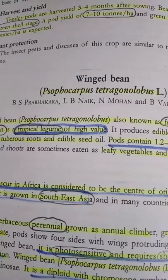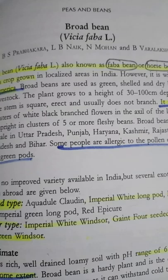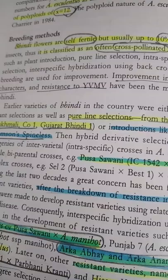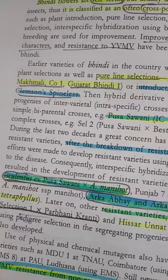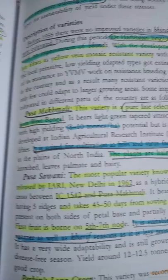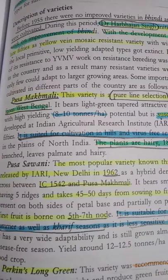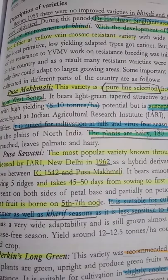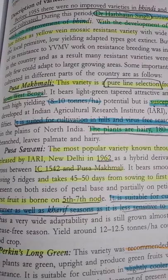Also remember: winged bean's botanical name is Psophocarpus tetragonolobus. Broad bean is Vicia faba, also called faba bean or horse bean. Okra is often cross-pollinated — this is very important. Parbhani Kranti variety of okra is a cross between Abelmoschus esculentus and Abelmoschus manihot. Do not confuse: Hisar Lalit and Hisar Arun are varieties of tomato, but Hisar Unnat is a variety of okra.